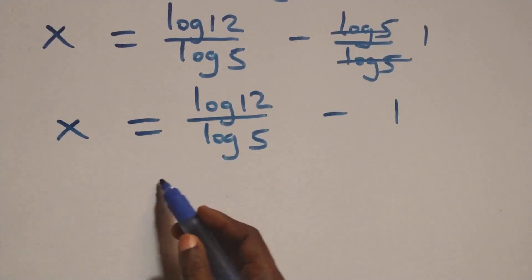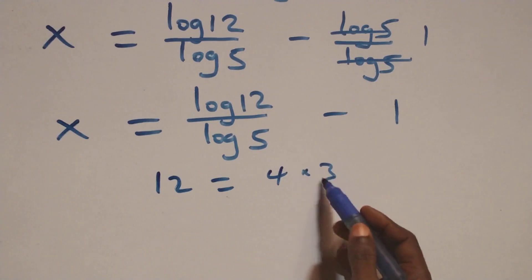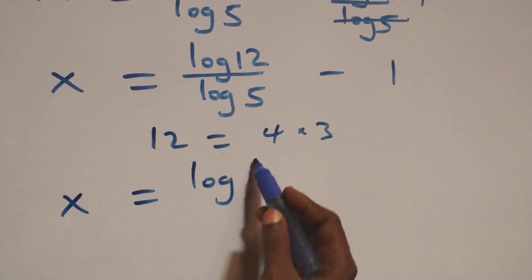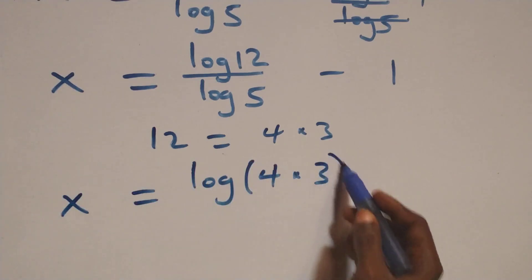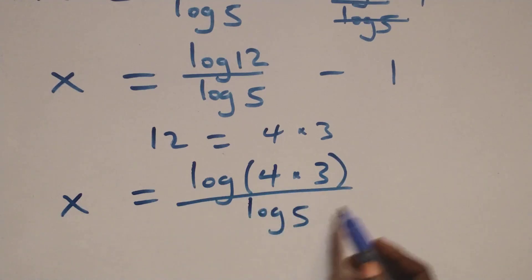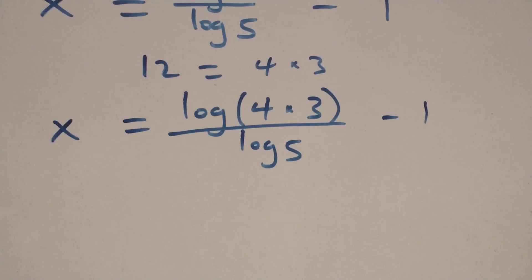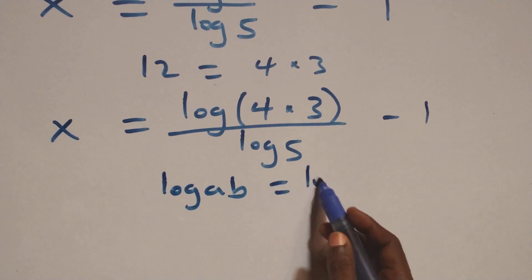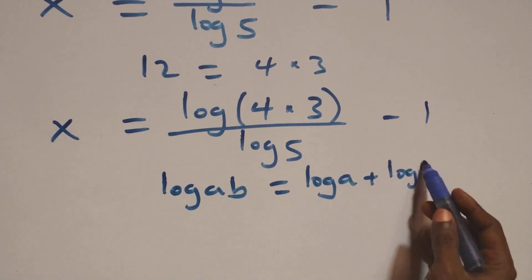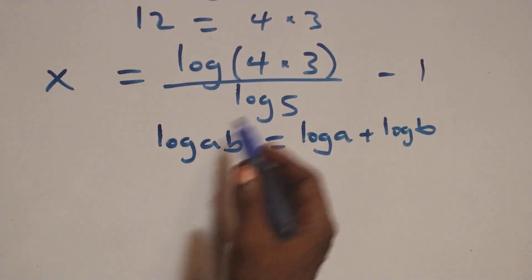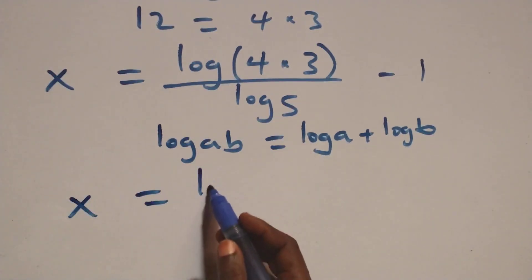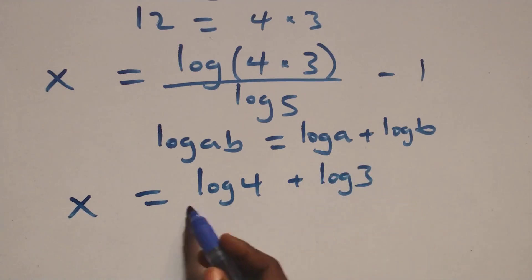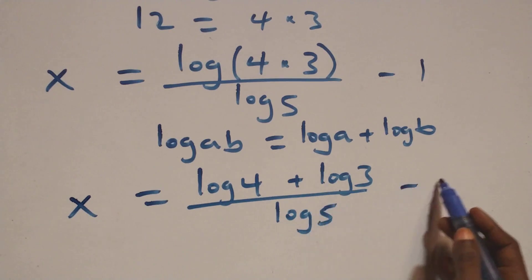We write 12 as 4 times 3, so x equals log(4 times 3) over log 5 minus 1. Applying the product rule of logarithms — log of a times b equals log a plus log b — this becomes x equals log 4 plus log 3, all over log 5, minus 1.